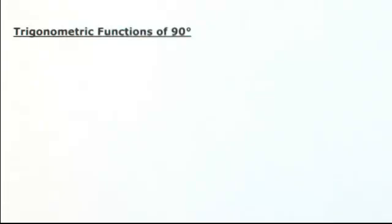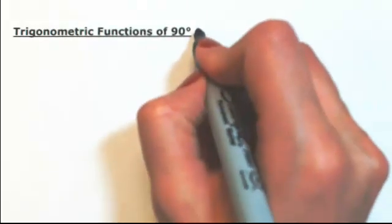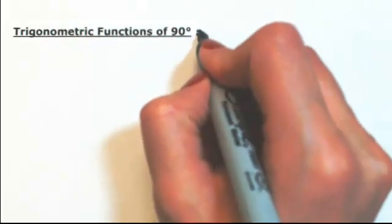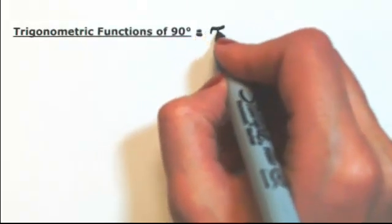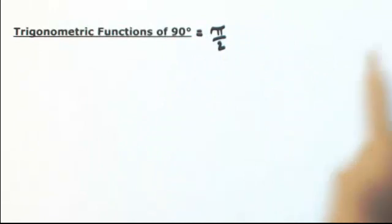Let's find the six trig functions of 90 degrees. It doesn't have to be in degrees — this could also be in radians. Remember that 90 degrees is the same thing as pi over 2 radians.